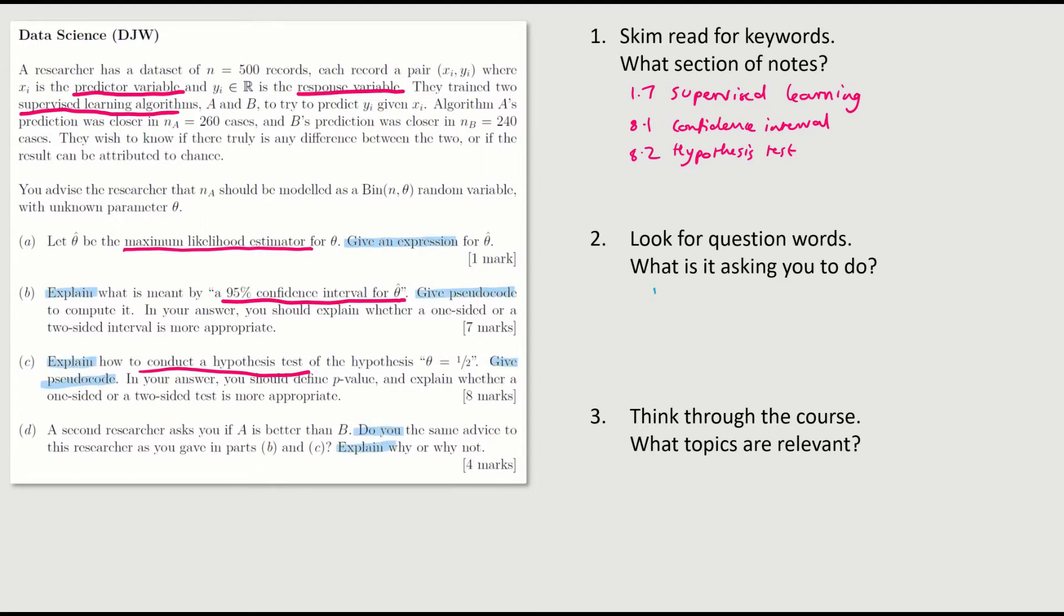Next, look for question words. What's this question asking us to do? We're asked to find a maximum likelihood estimator, explain and give pseudo code for a confidence interval, explain and give pseudo code for a hypothesis test. And then this last bit is strange. There's no clear keywords, no clear hint about what we're meant to be doing there.